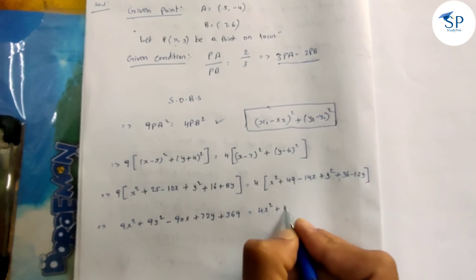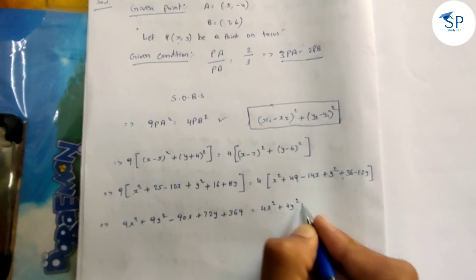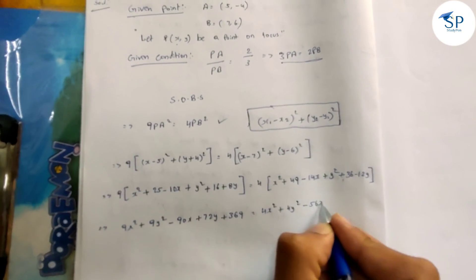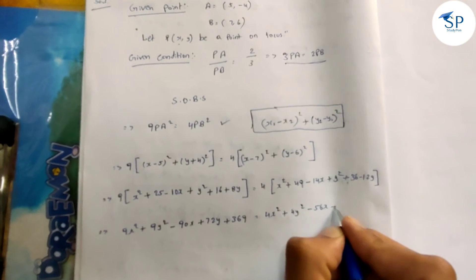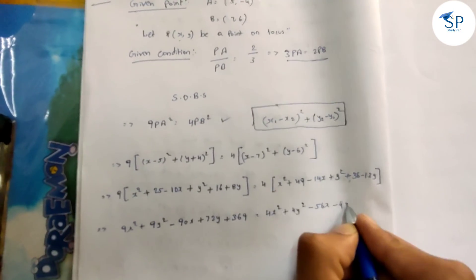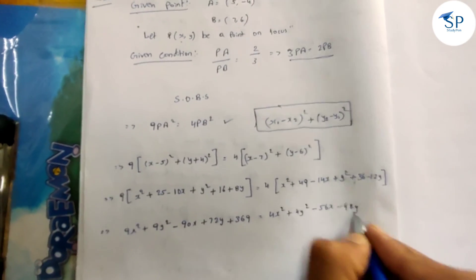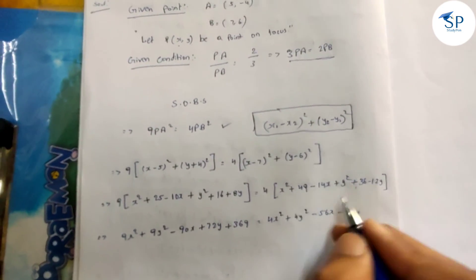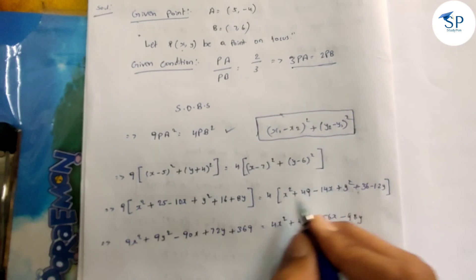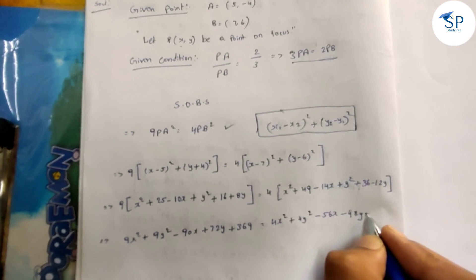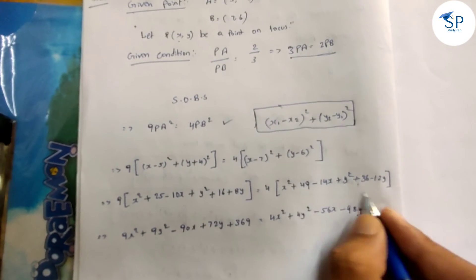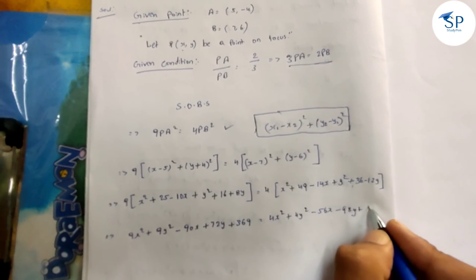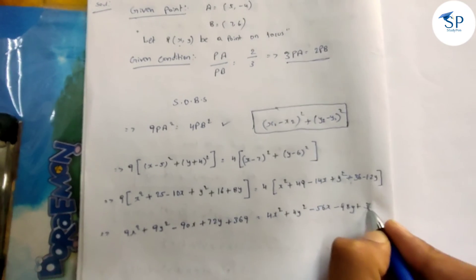Multiplying out the right side: 4x² + 4y² - 56x - 48y, with constant 49 × 4 + 36 × 4 giving 340.